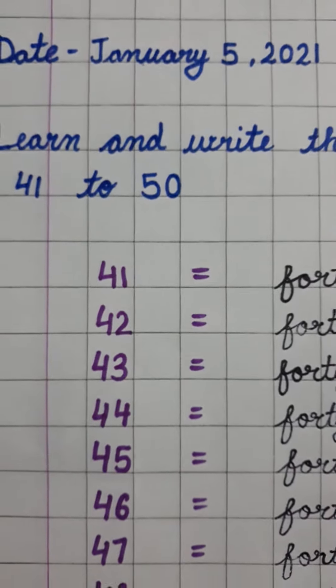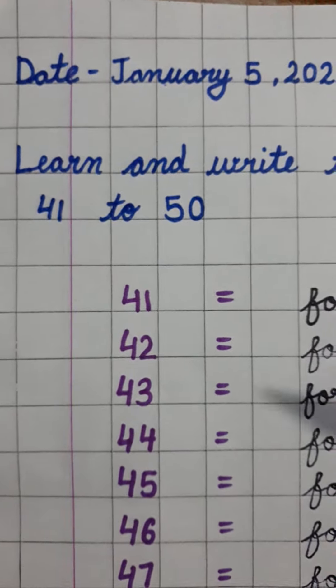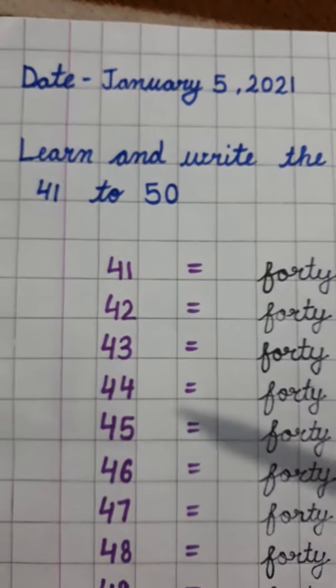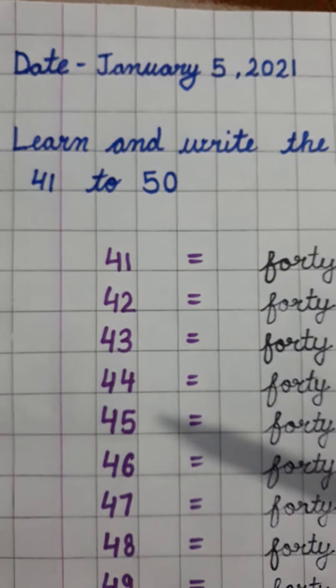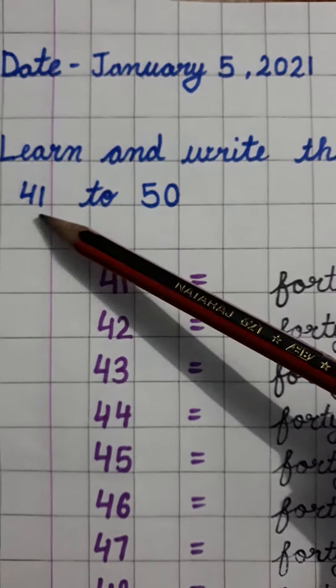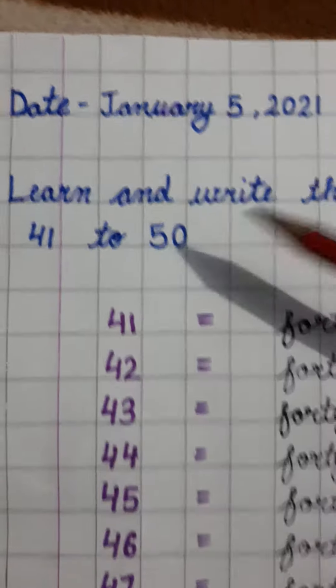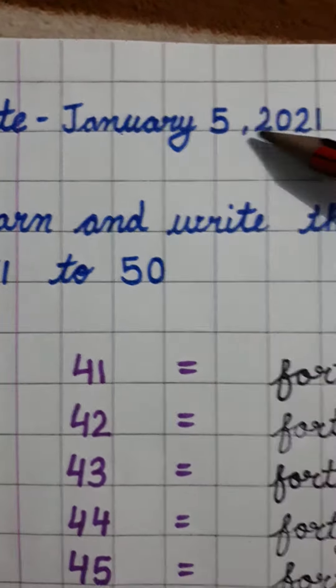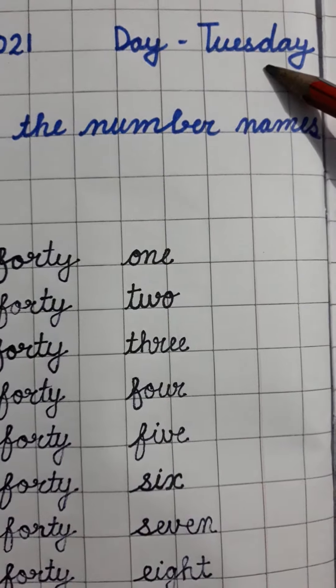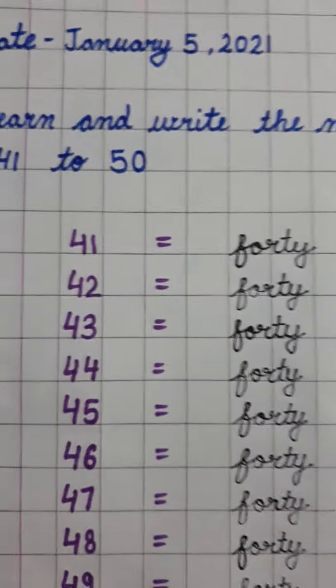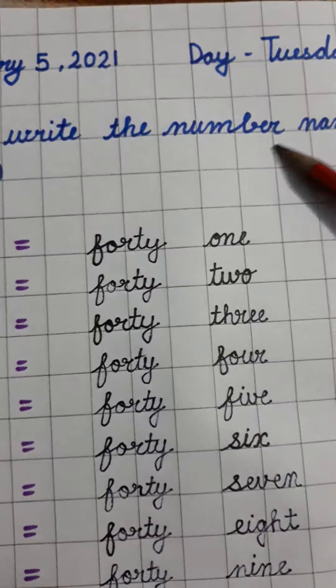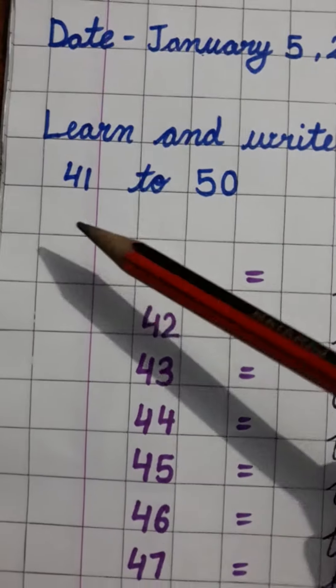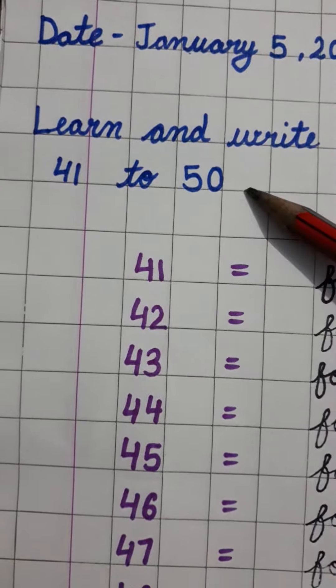Hello my dear students, I hope you all are fine. Today we are going to learn about spelling of number names 41 to 50. Today's date is January 5, 2021 and the day is Tuesday. Now let's start. Learn and write the number names 41 to 50.